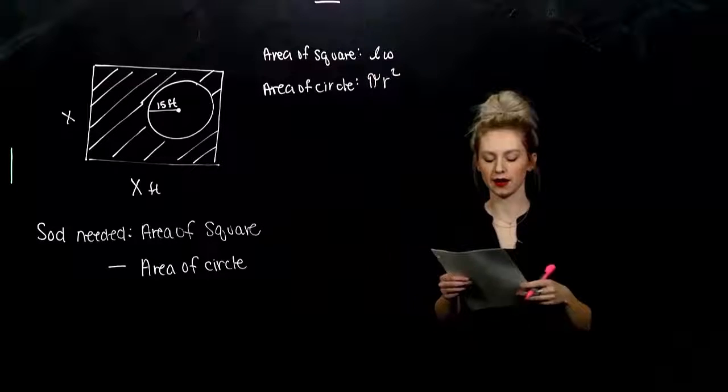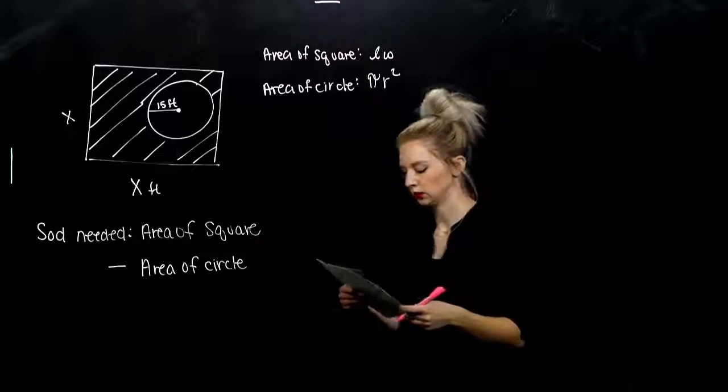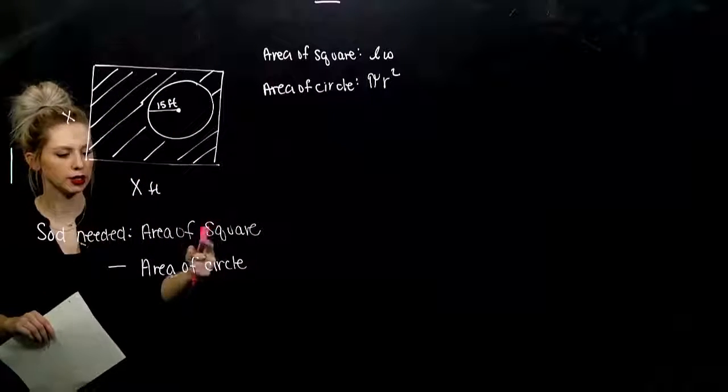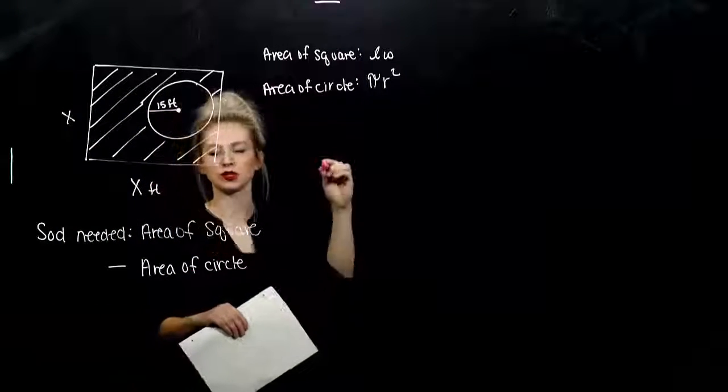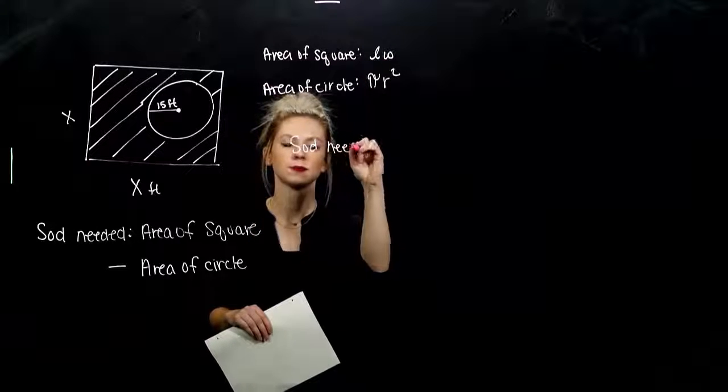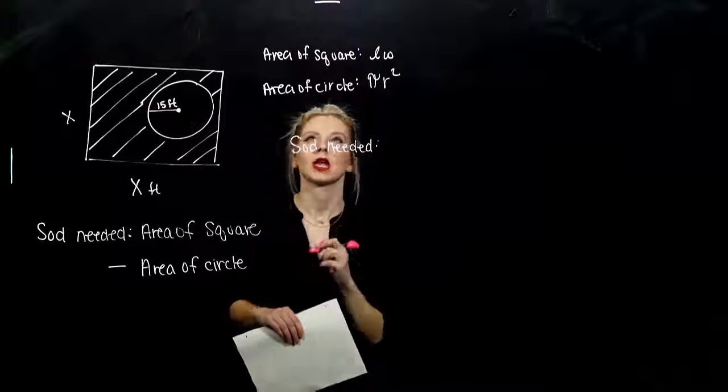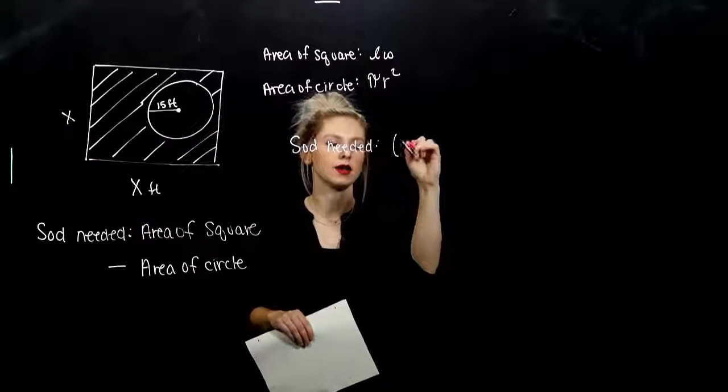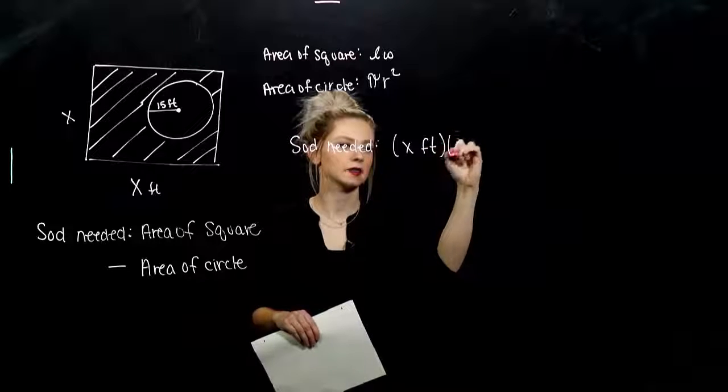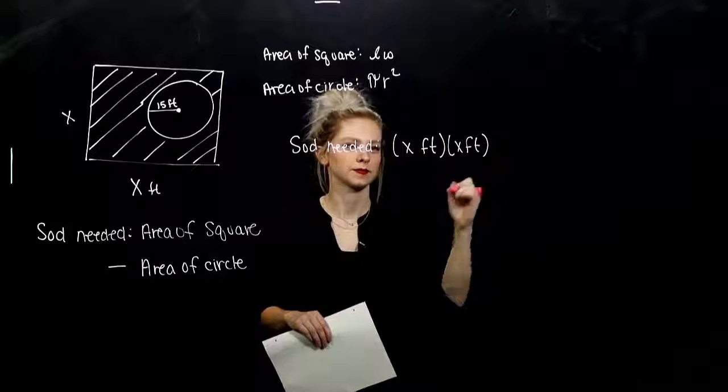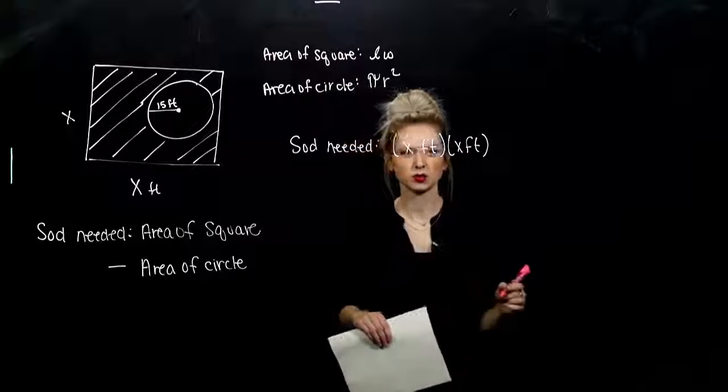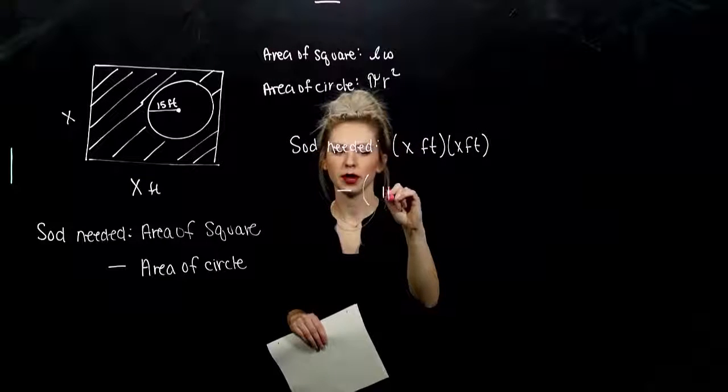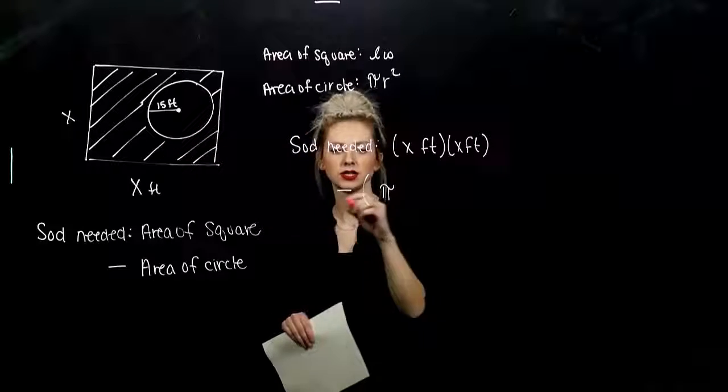And then an area of a circle. What is it looking like? Area of a circle is pi r squared. So pi is just that constant 3.1415 blah blah blah. And our radius is given to us 15 feet. So let's go ahead and plug that piece of information in. What is our sod that's needed? Area of the square, length times width. So I'll have x feet times x feet. And what am I subtracting off? From that, I'm subtracting off the area of the circle. Pi times 15 feet squared.